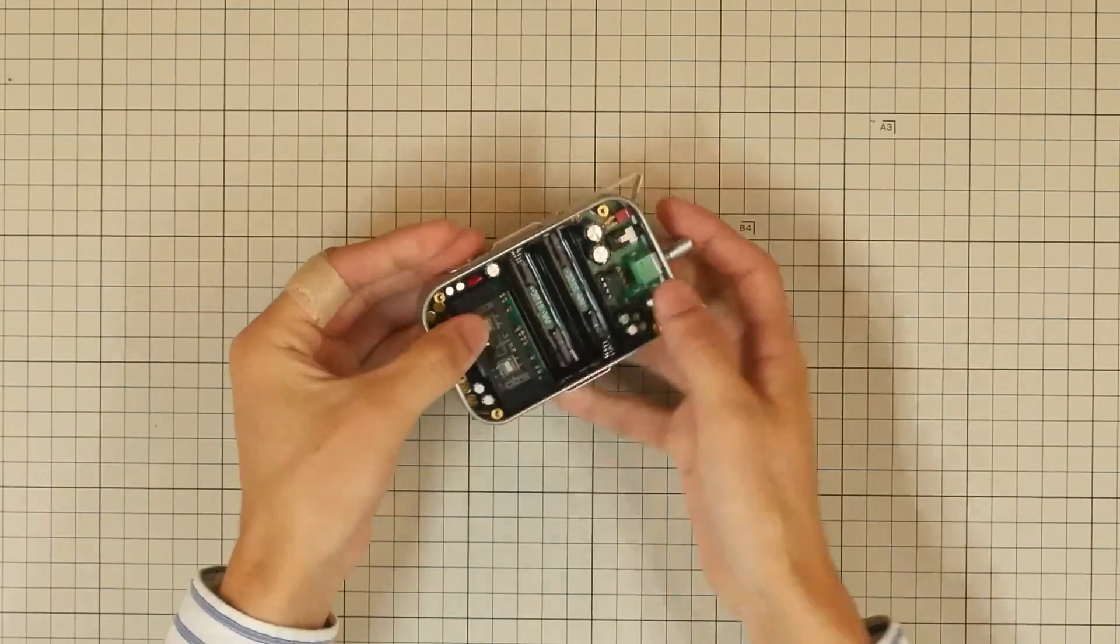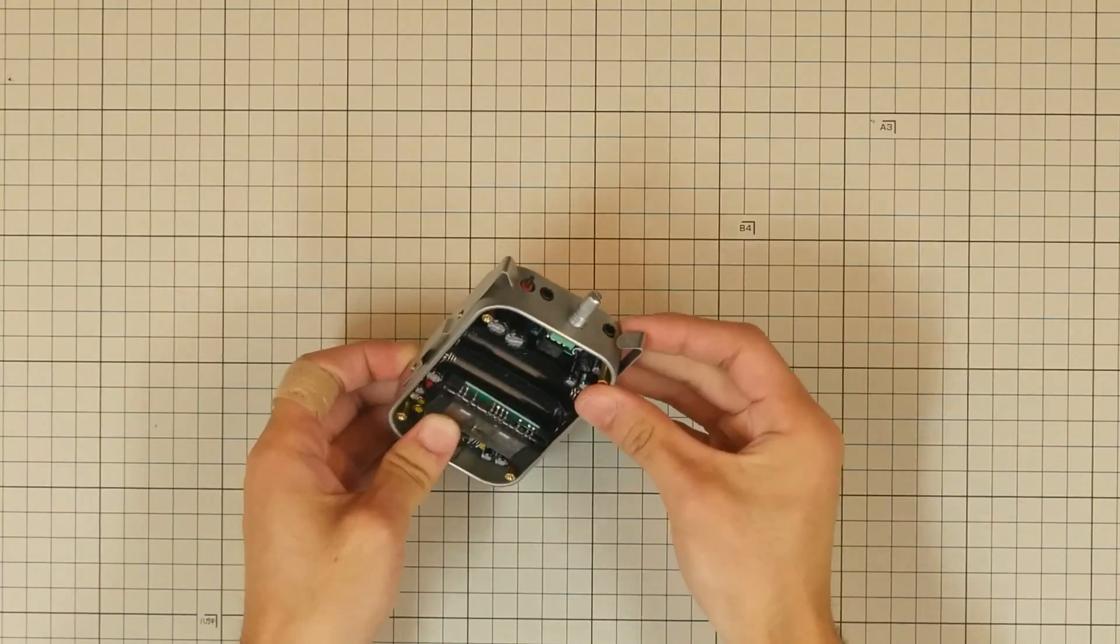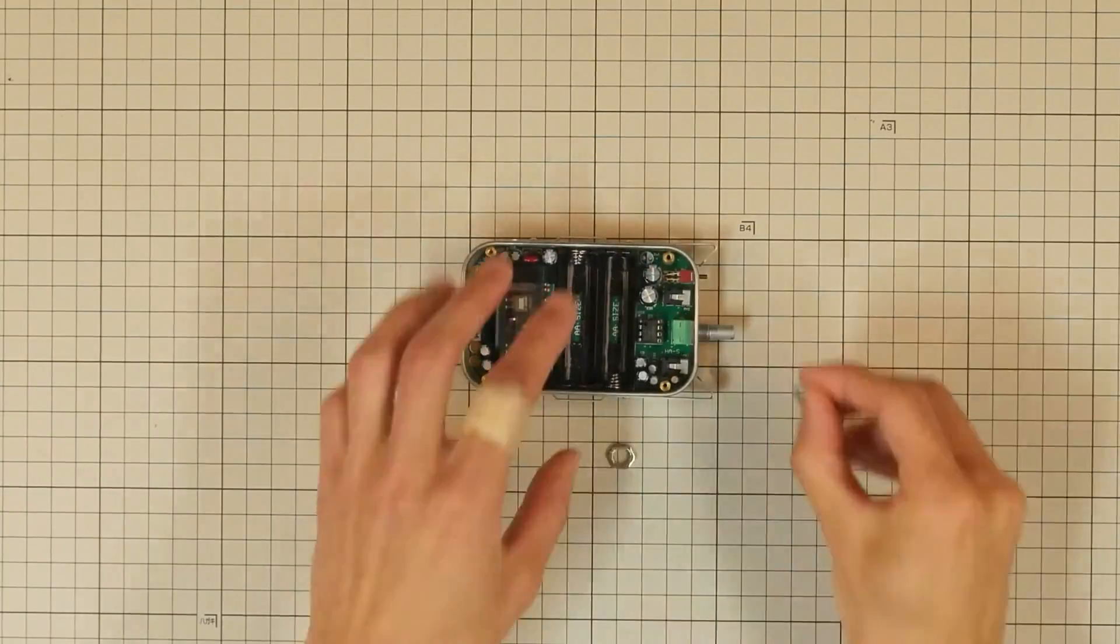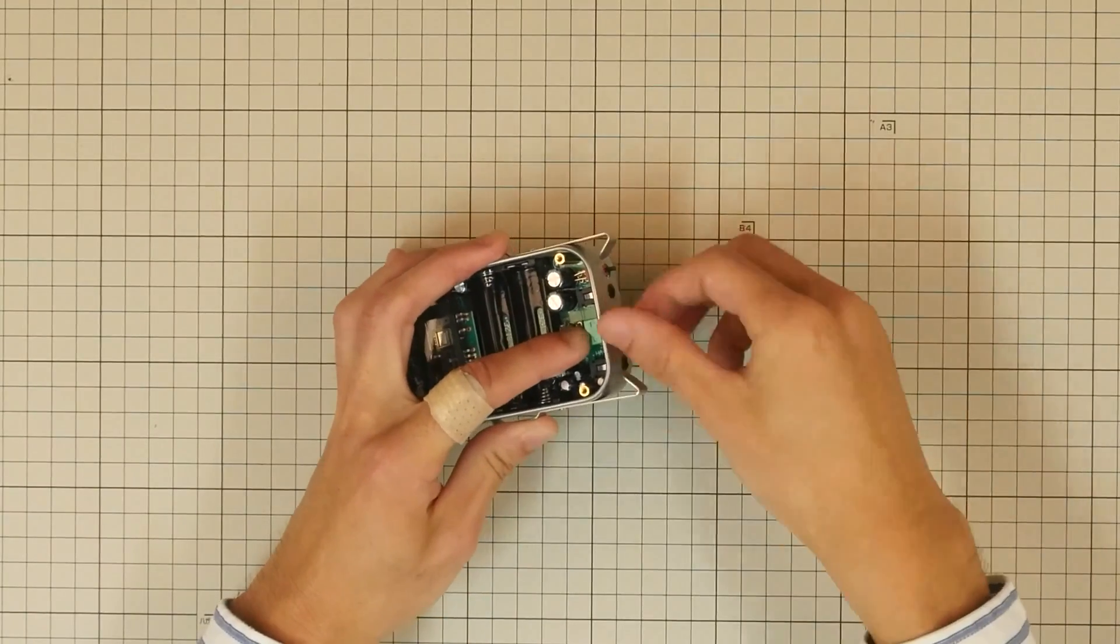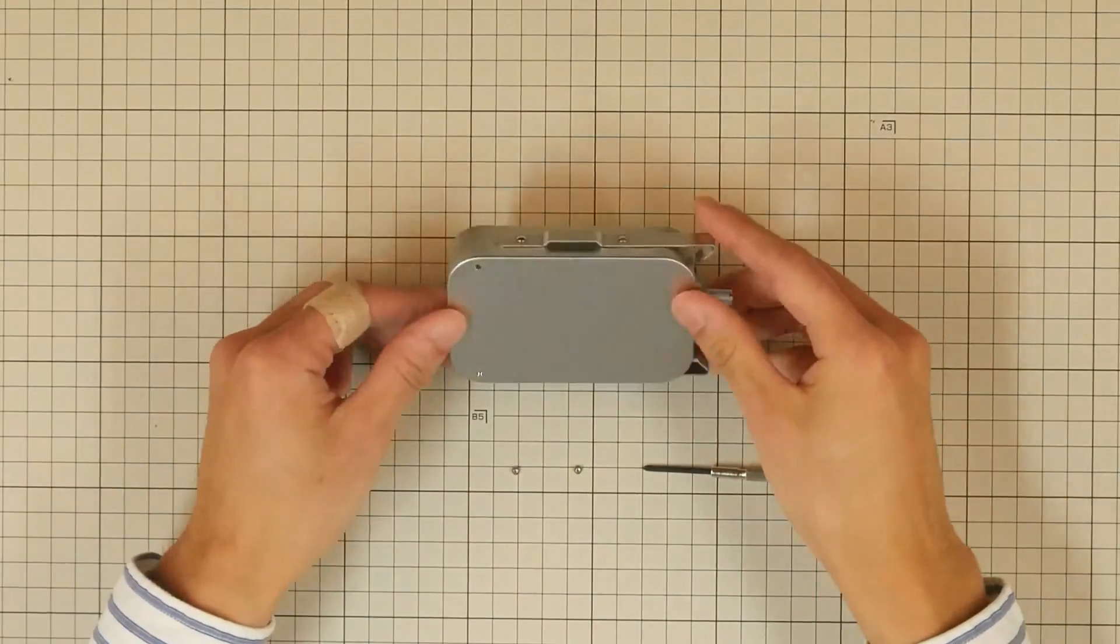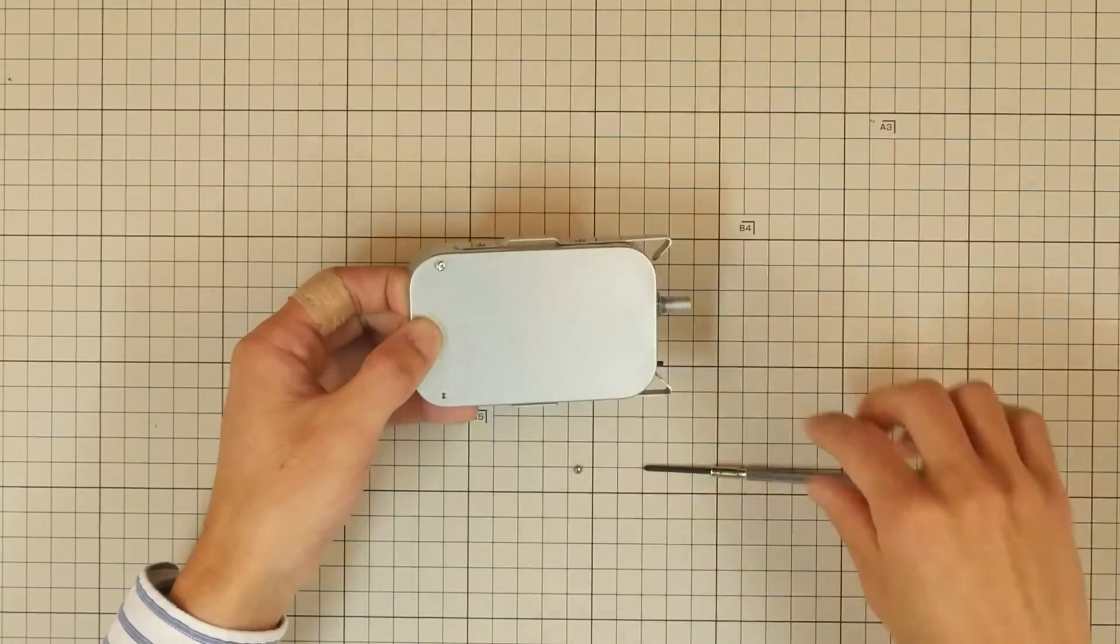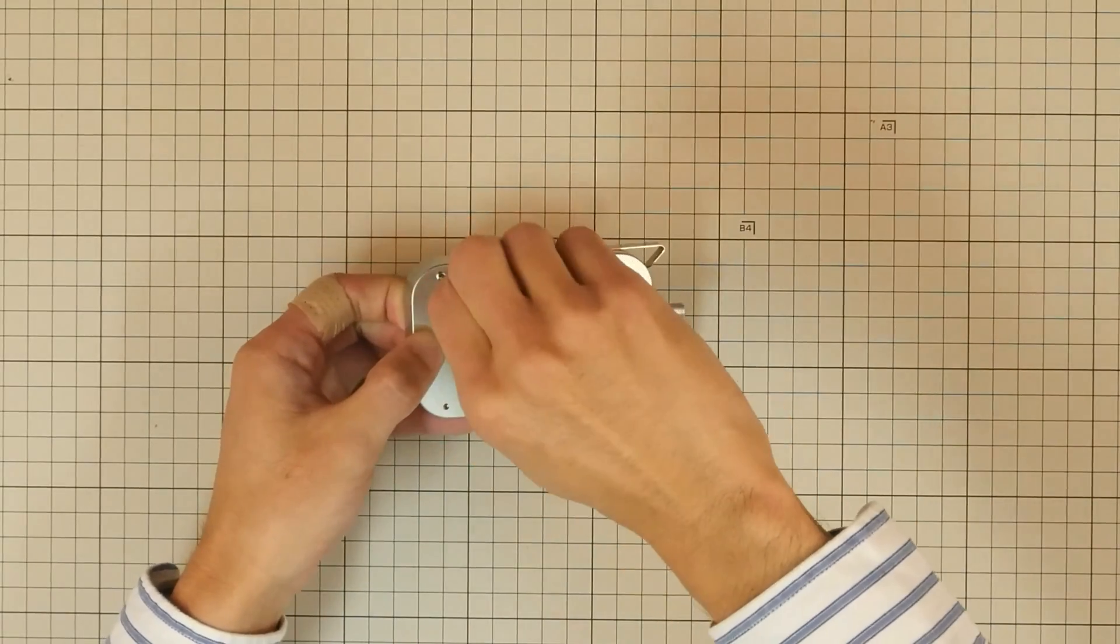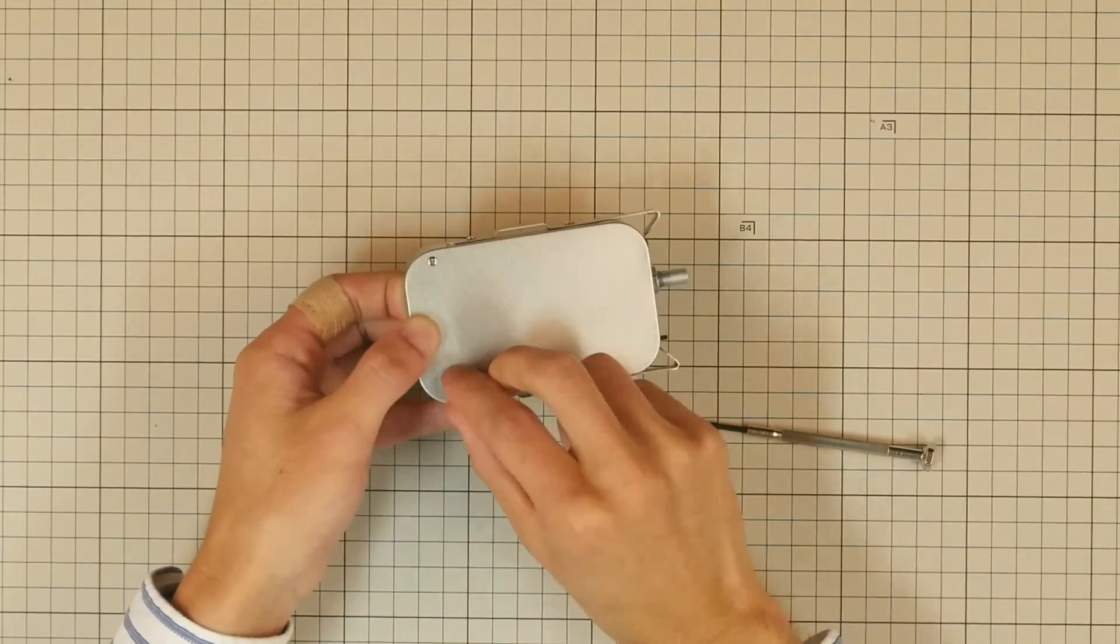Make sure that there is no nut and washer attached to the volume control and slide the main circuit board into the case. After mounting, attach the washer to the volume and then use the volume nut to temporarily tighten the volume onto the case. Fix the main circuit board in place by using two small silver screws into the two holes at the bottom of the case.